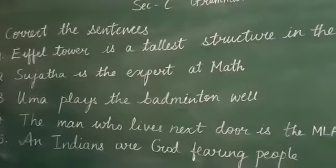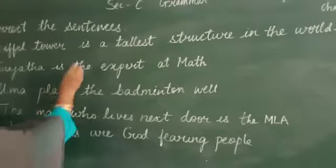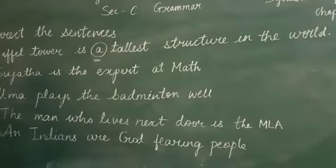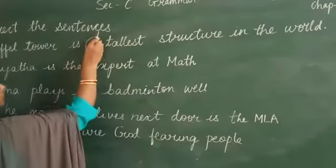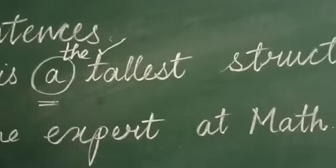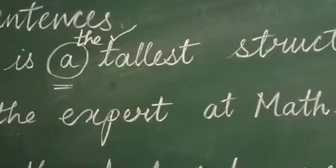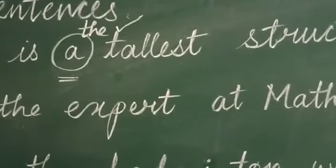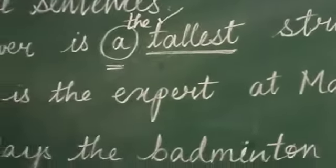Let's check the first one: 'Iftar is a tallest structure in the world.' Here, 'a' is wrong. What will we use — 'an' or no article? We will be using 'the'. Why 'the'? Because of 'tallest' — we have to use 'the' before the superlative degree of the adjective: tallest, shortest, highest. We are going to use 'the' before the superlative degree of an adjective.